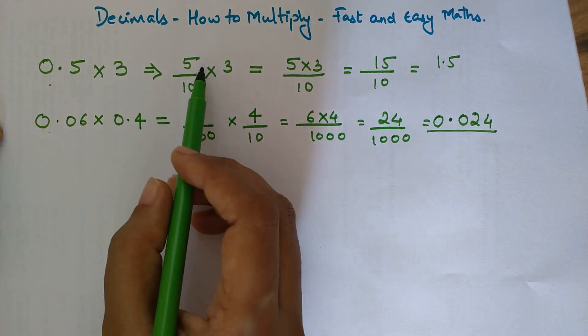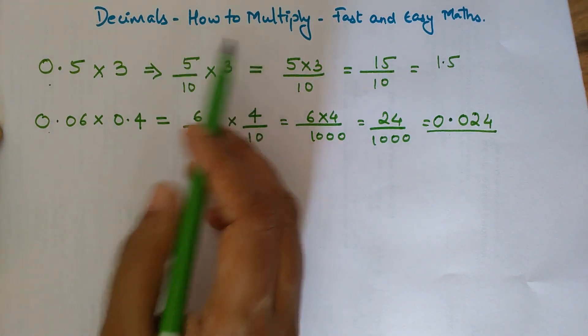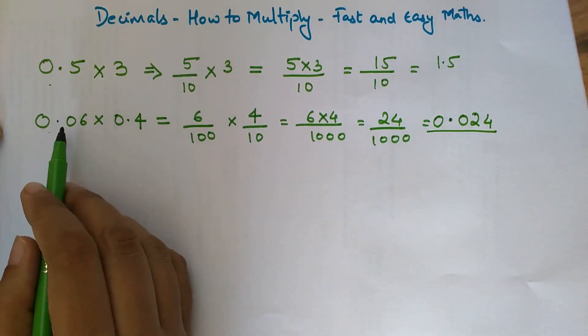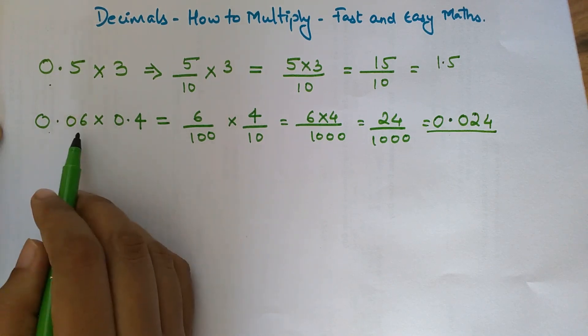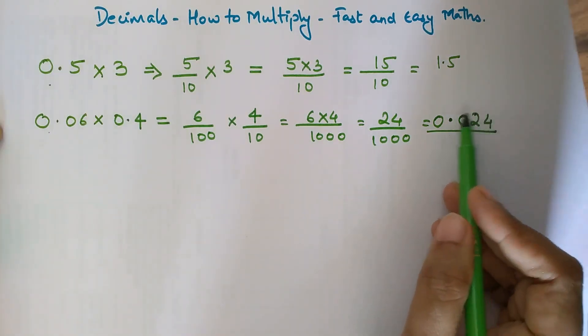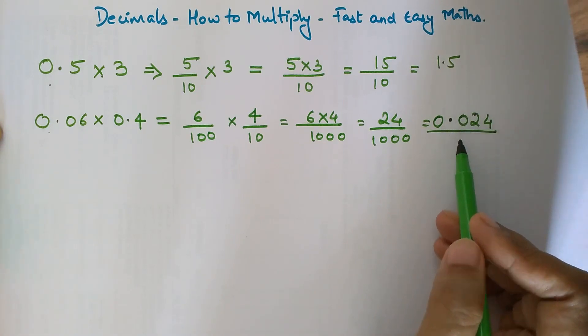This is the rule you will follow when you have to multiply. The total number of digits after a decimal point in both numbers will give you the idea where you should put the decimal point in your final answer.